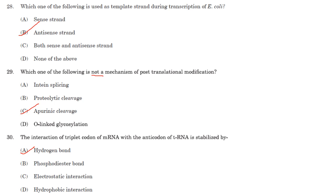Which one of the following is not a mechanism of post-translational modification? Intein splicing (also called protein splicing), proteolytic cleavage, and O-linked glycosylation are all post-translational modifications. The answer is apurinic cleavage — an apurinic site is a location in DNA that has neither a purine nor a pyrimidine base.